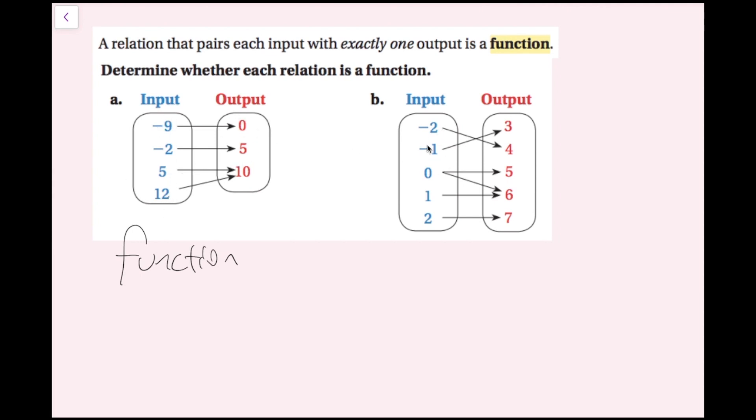So for part B, I have negative 2 that goes to 4, negative 1 goes to 3, 0 is going to both 5 and 6, 1 is going to 6, and then 2 is going to 7. Well this is actually not going to be a function, because if we look, the definition is each input has to go to exactly one output, but my input of 0 is actually going to both 5 and 6, so 0 has two outputs. So because of that, it's not exactly 1, therefore this is not a function. And now we're done with this example.